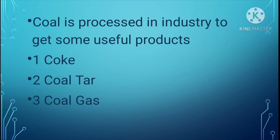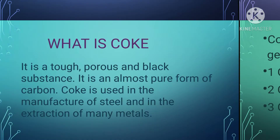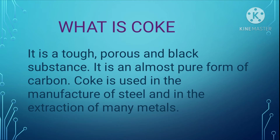What is coke? Coke is a tough, porous, and black substance. It is almost a pure form of carbon. Coke is used in the manufacture of steel and in the extraction of many metals. Basically, coke is a product which is very black, very porous, and tough — it is very hard. It is almost made up of a pure form of carbon, and is used in the manufacture of steel and in the extraction of many metals.